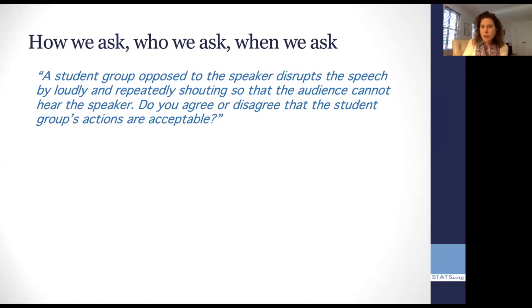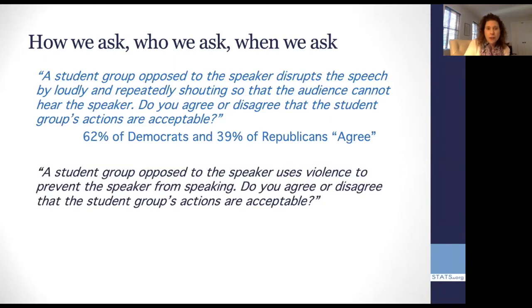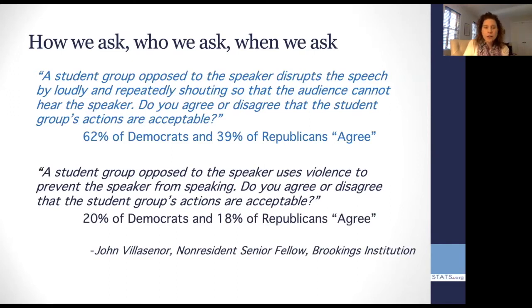If a student group opposed to the speaker disrupts the speech by loudly and repeatedly shouting, so the audience can't hear the speaker, do they agree or disagree that those students actions were acceptable? And here they found a very large disparity between what Democrats thought. 62% agreed with it as being acceptable and 39% of Republicans agreed. Then the questionnaire asked, a student group opposed to the speaker uses violence to prevent the speaker from speaking. Do you agree or disagree that those actions by that group were acceptable? And a surprisingly large number of people, according to this survey, responded. 20% of Democrats, 18% of Republicans, again, among college students who are responding to this, agreed.